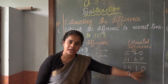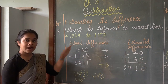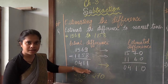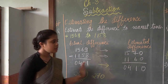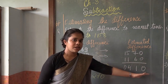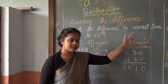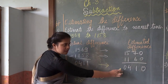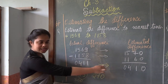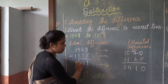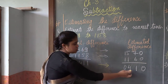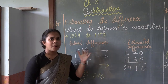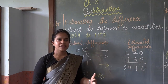When you subtract the estimated numbers you will get 410. You can also do it the other way — first subtract and then estimate to the nearest tens or hundreds as per the question. If we subtract first and then find the estimated difference, the estimation is also 410.